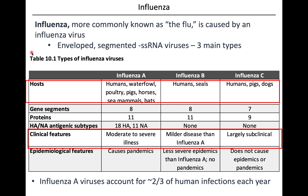We're all familiar with influenza, with the flu. We've probably all had the flu at some point in our lives. This is a negative-sense, single-stranded RNA virus. It's enveloped, and it has a segmented genome. And there are three main types: influenza A, B, and C.